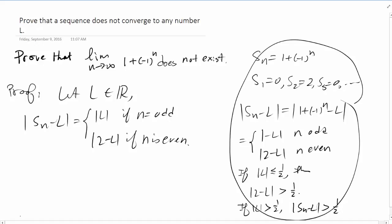Now if |L| ≤ 1/2, for ε₀ = 1/2, we have |Sn - L| = |2 - L| > 1/2 for all even n.